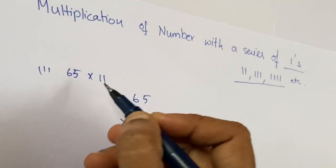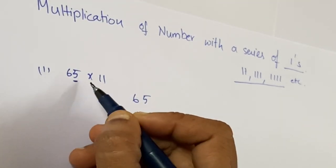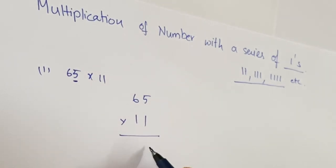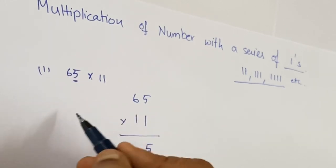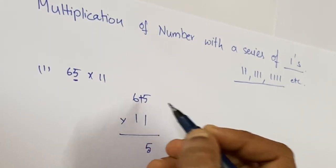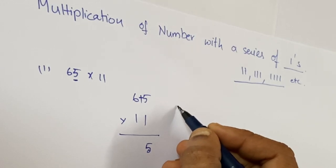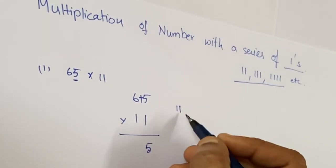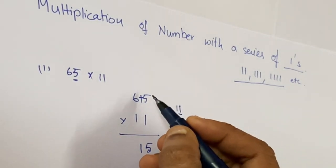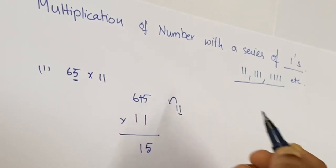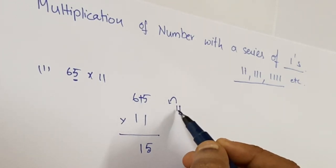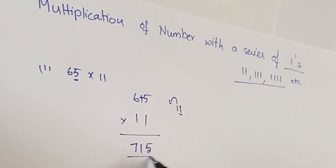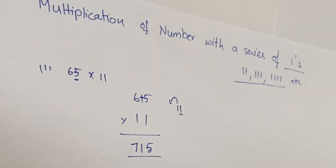You have to write the units or ones place of the number as it is, that is 5. Next you have to add the two digits, that is 6 plus 5. What is the answer? 6 plus 5 is 11. You have to take the units place 1 here and carry this to the next one. Next you have to write the second digit plus the carried number, that is 6 plus 1 equals 7. So the answer is 715.